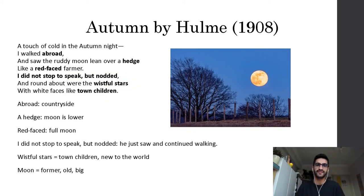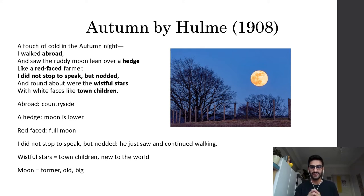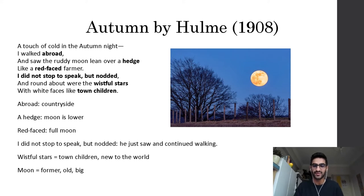Now let's talk about our first poem, 'Autumn,' written in 1908. It is very short. 'A touch of cold in the autumn night — I walked abroad.' Here 'abroad' means countryside. 'And saw the ruddy moon lean over a hedge.' This means the moon is low, leaning down. 'Like a red-faced farmer' — red-faced means it is a full moon, which appears red. 'I did not stop to speak, but nodded' — he simply admired the beauty of the moon and continued walking. 'And round about were the wistful stars.'